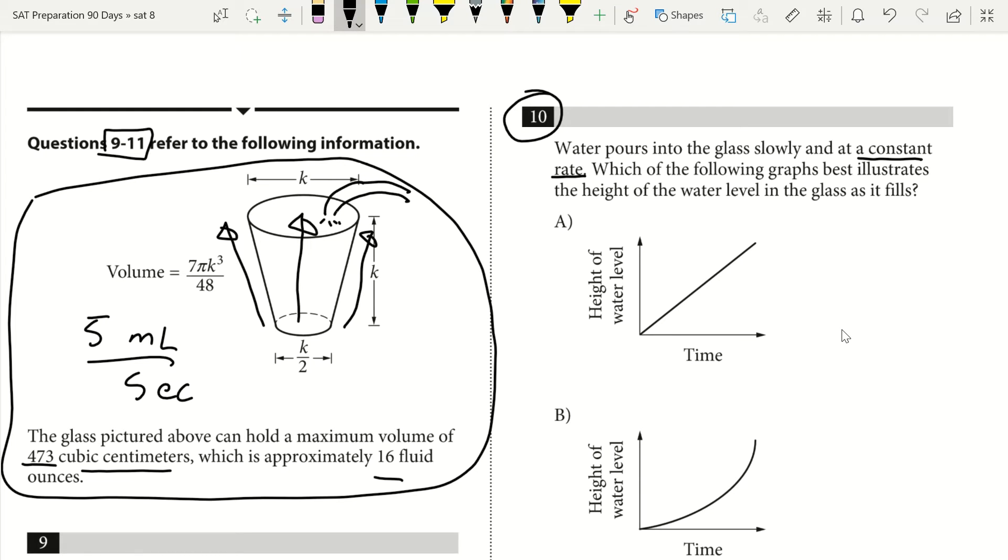As water is going in, obviously we think that it's going to fill very quickly down low because it can't go out as wide. But as we get higher we see that this cup goes wider, so that height that it's filling is going to slow.